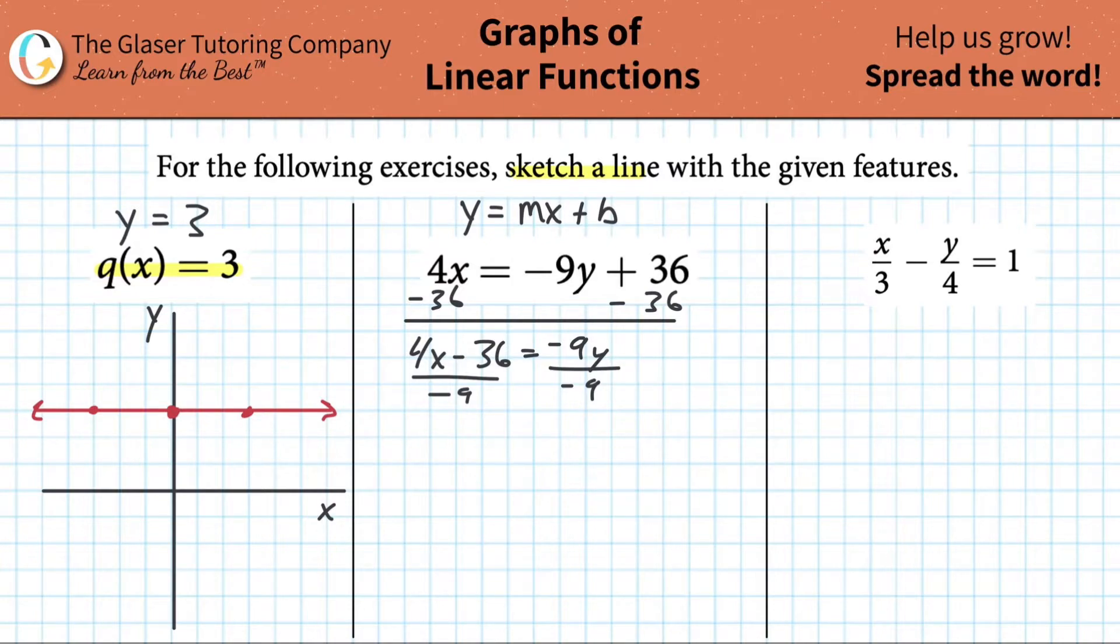So why don't I subtract the 36 from the left? So what that would then be is 4x minus 36 is equal to negative 9y. And now what can I do? Well, I got to get y by itself, so I'm going to divide each side by negative 9. And now, lo and behold, here is our equation. Let me do it this way.